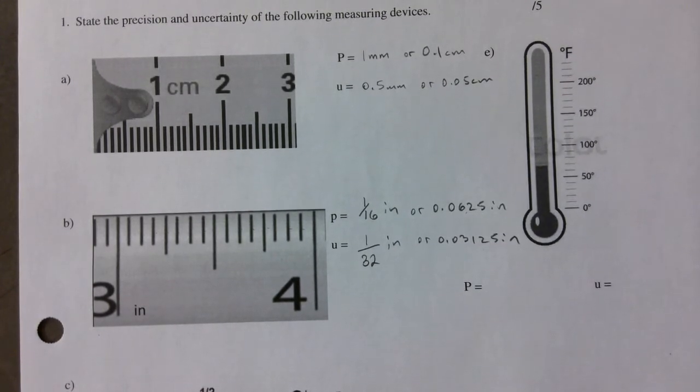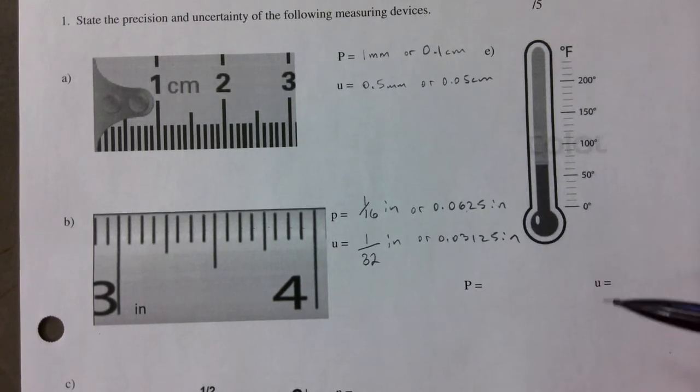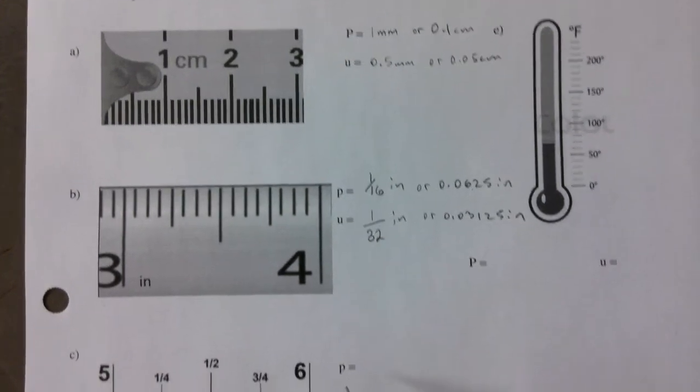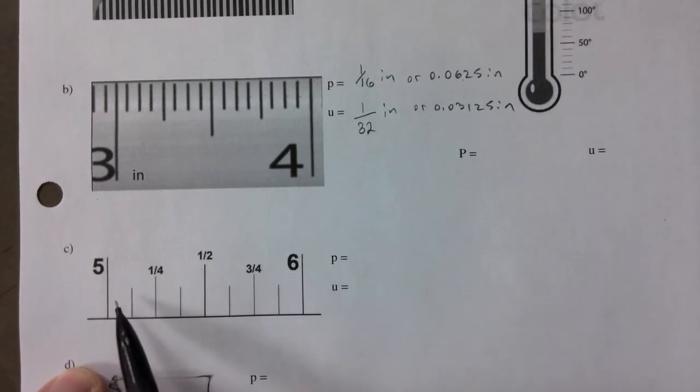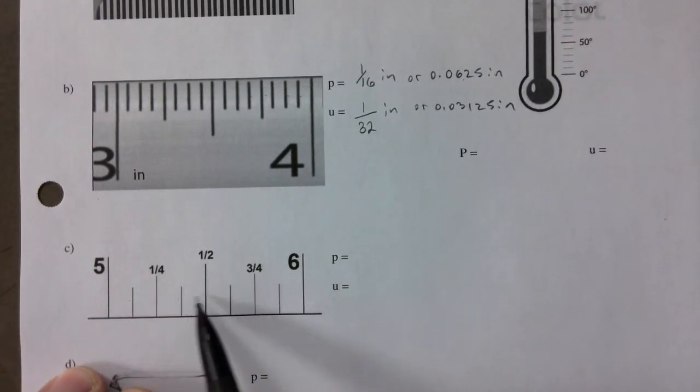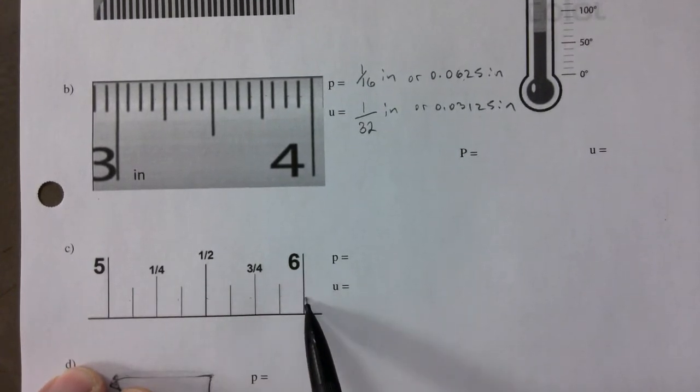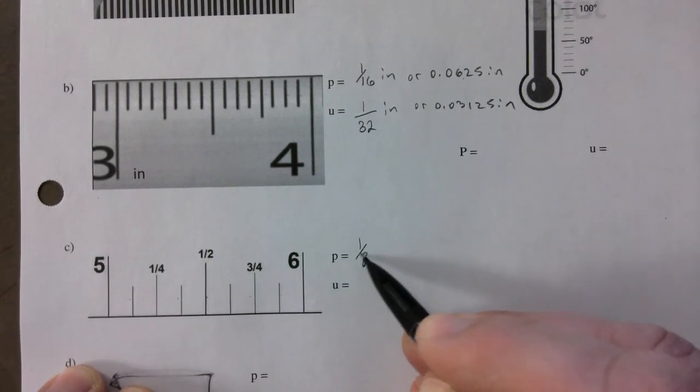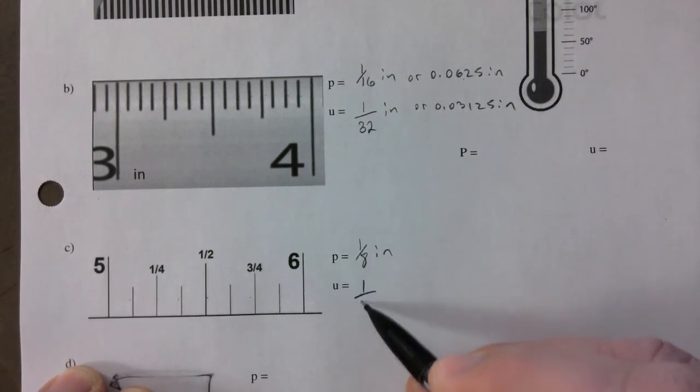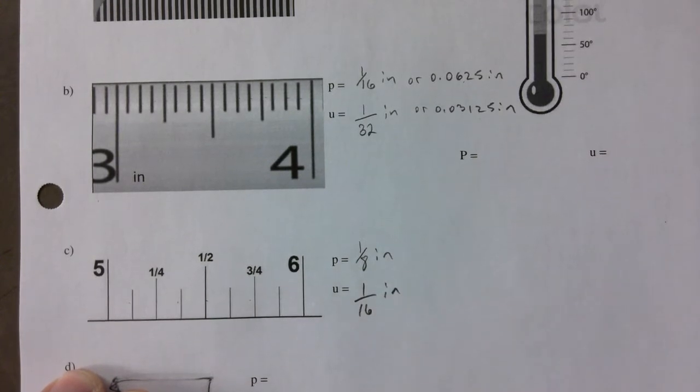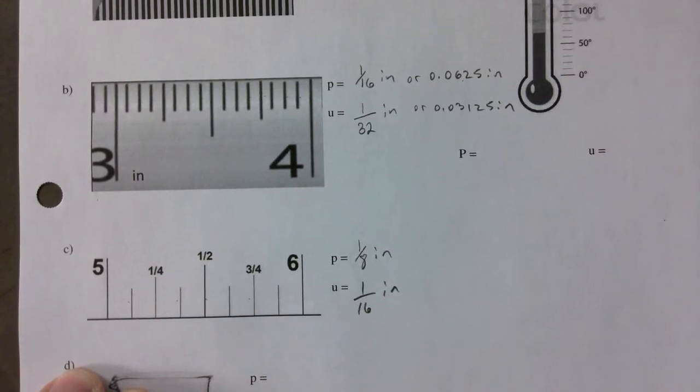Here, if you think about it, count: 1, 2, 3, 4, 5, 6, 7, 8. It goes up by one eighth of an inch, which is one sixteenth of an inch in terms of the uncertainty.